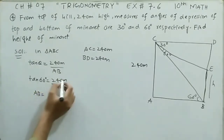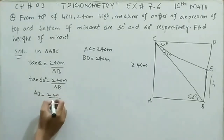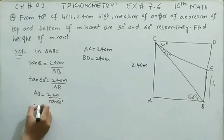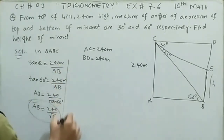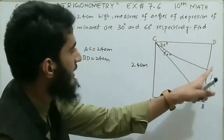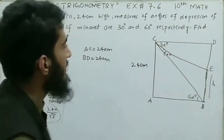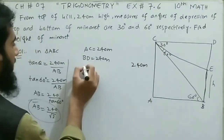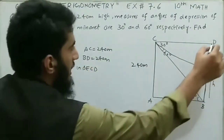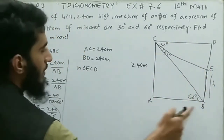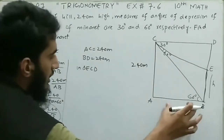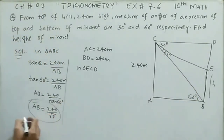Shifting AB to the left and tangent 60 to the right: AB equals 240 divided by tangent 60, which equals 240 divided by √3. The corresponding side CD also equals 240 divided by √3 meters, since CD corresponds to AB. Now taking triangle ECD: we will find perpendicular distance ED divided by base CD.